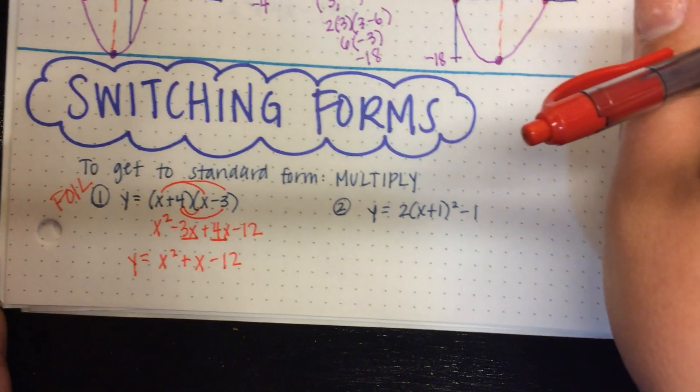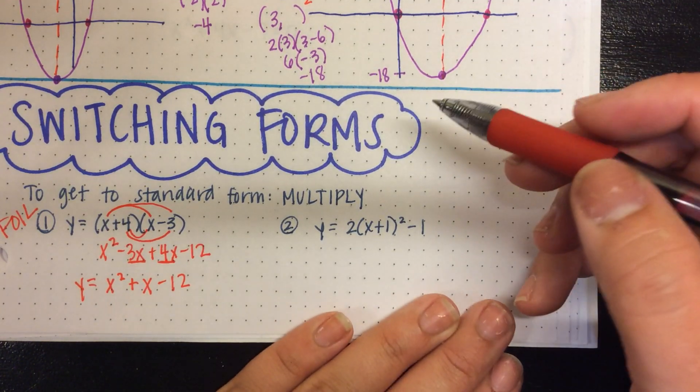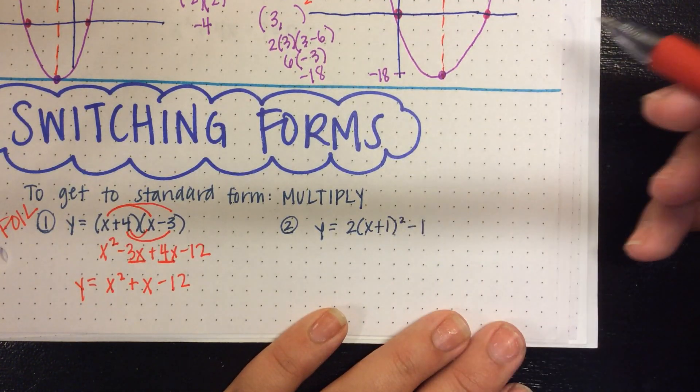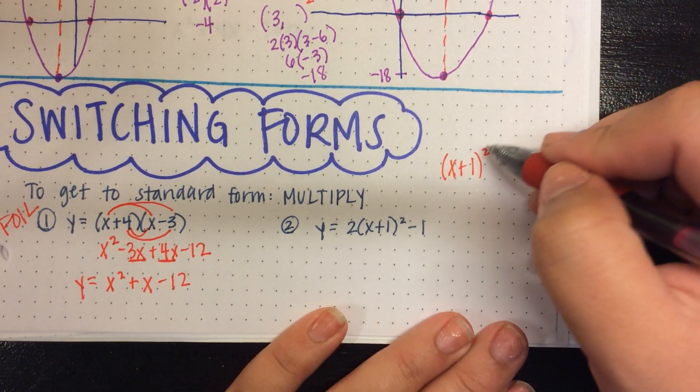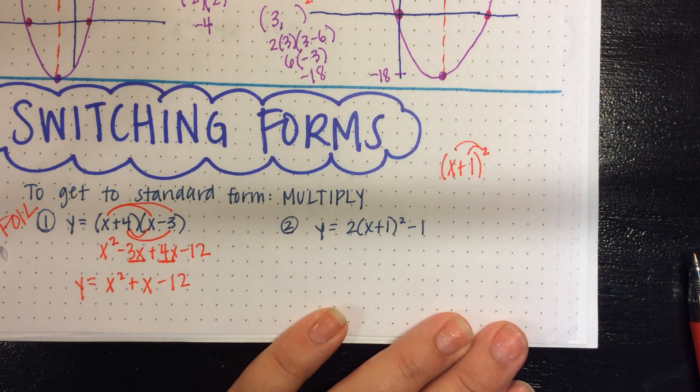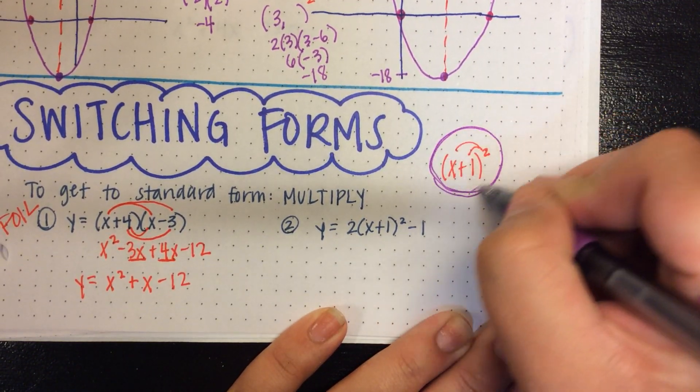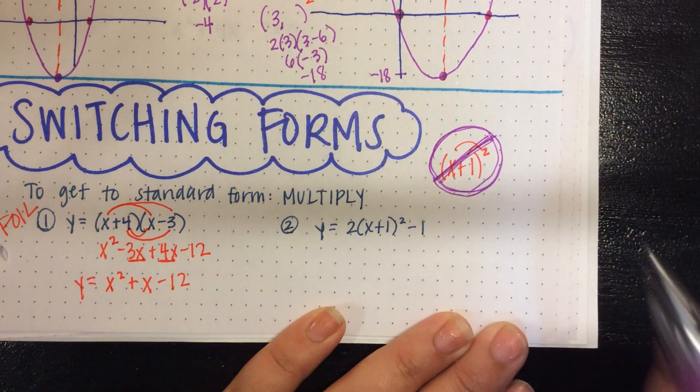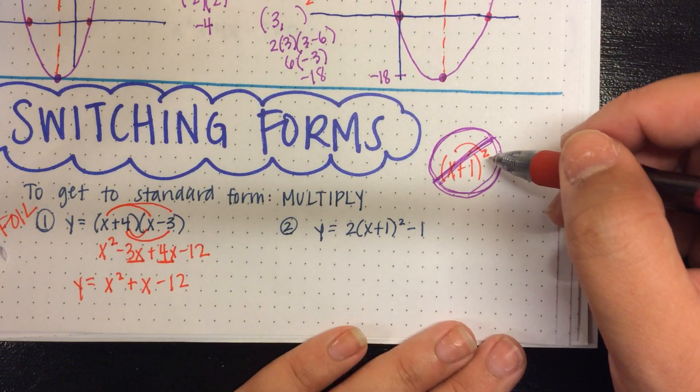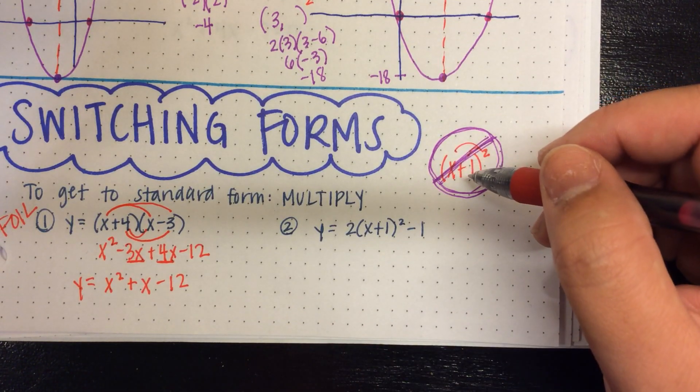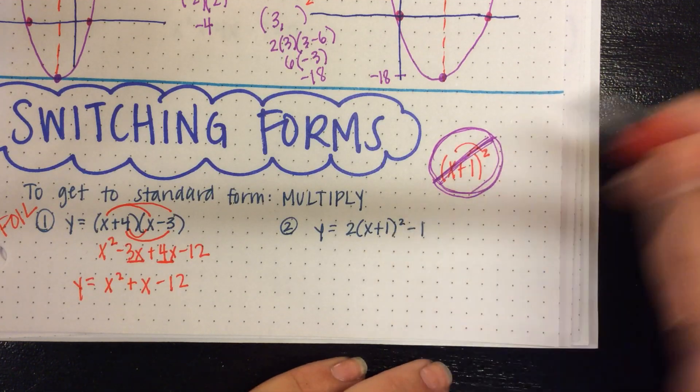Same thing for number 2, except, oh my goodness, you drive me absolutely insane. This x plus 1 squared. Don't ever, ever, ever distribute this 2. No can do. This is a big no-no. Big no-no. This is a binomial. You cannot distribute an exponent unless it's a monomial. No adding and subtracting in between.